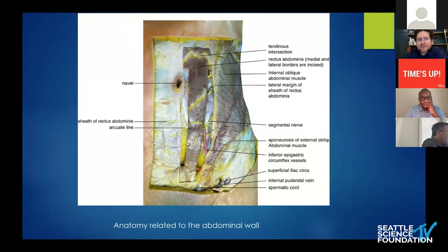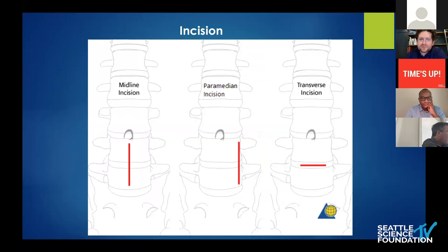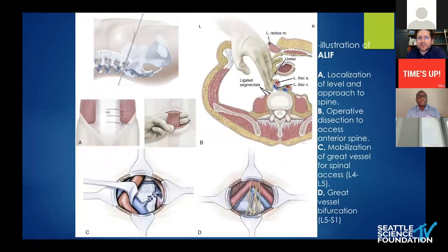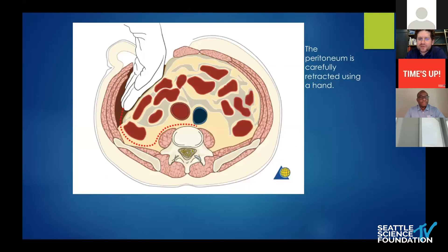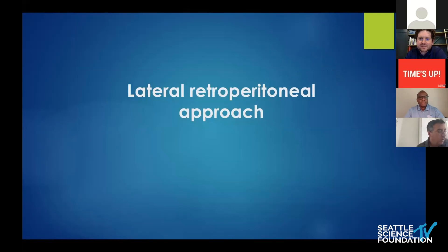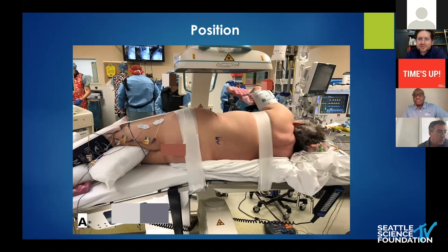For an anterior approach, most of us will have an access surgeon perform the exposure. It's good to understand all the different incisions, because the patient will first see you in the office, and you want to describe it to them. I always meet with my access surgeons and know exactly their approach, so I can give the patient a thorough understanding. It is performed through a retroperitoneal approach — all the organs are pushed aside, the vessels are retracted, and I actually keep slides of this in my office to show patients before they see the access surgeon.